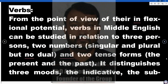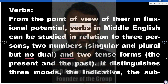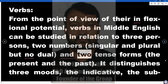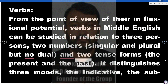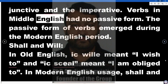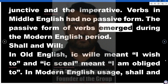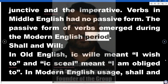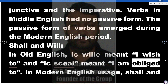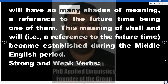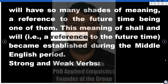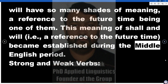Verbs. From the point of view of their inflectional potential, verbs in Middle English can be studied in relation to three persons, two numbers (singular and plural, but no dual), and two tense forms (the present and the past). It distinguishes three moods: the indicative, the subjunctive and the imperative. Verbs in Middle English had no passive form — the passive form of verbs emerged during the Modern English period. Shall and Will: In Old English, 'I will' meant 'I wish to' and 'I shall' meant 'I am obliged to'. In Modern English usage, shall and will have many shades of meaning, a reference to the future time being one of them. This meaning of shall and will, i.e., a reference to the future time, became established during the Middle English period.